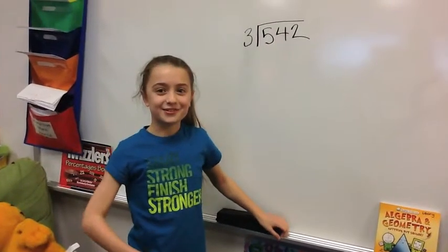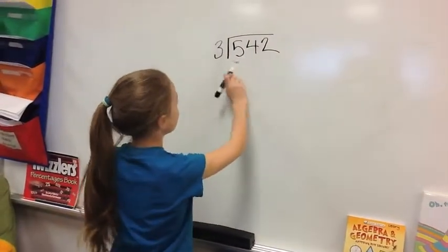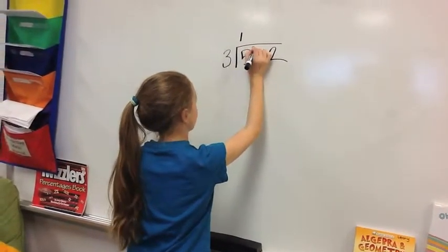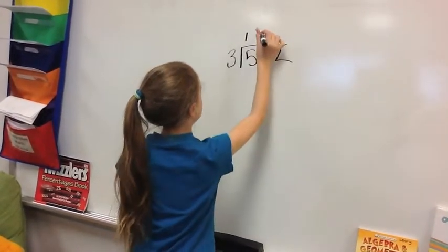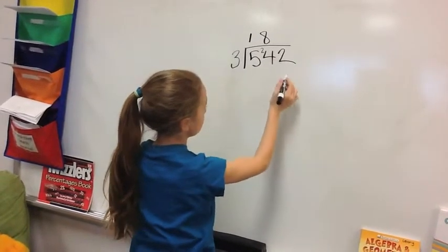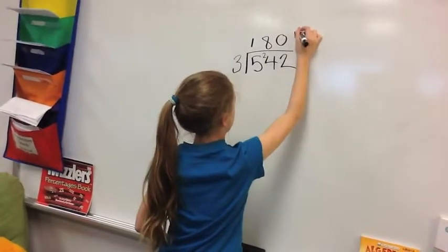I'm going to show the method of short division. So 3 can go into 5 one time with a remainder of 2. And then 3 can go into 24 eight times. And then 3 can't go into 2. So it's 0 remainder 2.